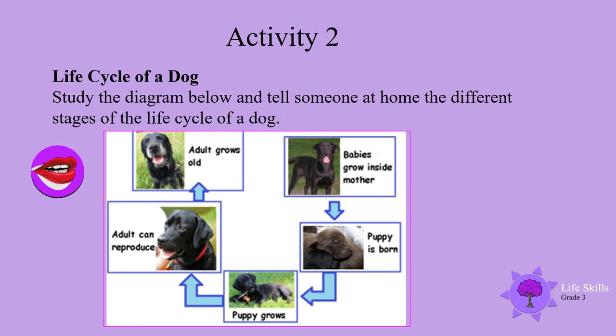Activity 2. Life cycle of a dog. Study the diagram below and tell someone at home the different stages of the life cycle of a dog. The babies grow inside the mother. Then puppies are born. The puppy grows after drinking lots of milk from mum. Then the puppy becomes an adult, and then the dog grows old.